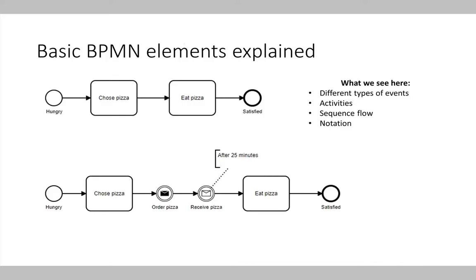What are the basic BPMN elements? The basic BPMN elements we see on the slide are events, sequence flows, and activities. An activity is represented by a rectangle with rounded corners. For example, choose a pizza or eat a pizza — that's an activity that's part of a process.